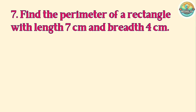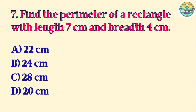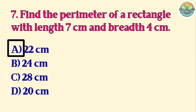Question 7. Find the perimeter of a rectangle with length 7 cm and breadth 4 cm. A. 22 cm. B. 24 cm. C. 28 cm. D. 20 cm. Correct answer is A. 22 cm.